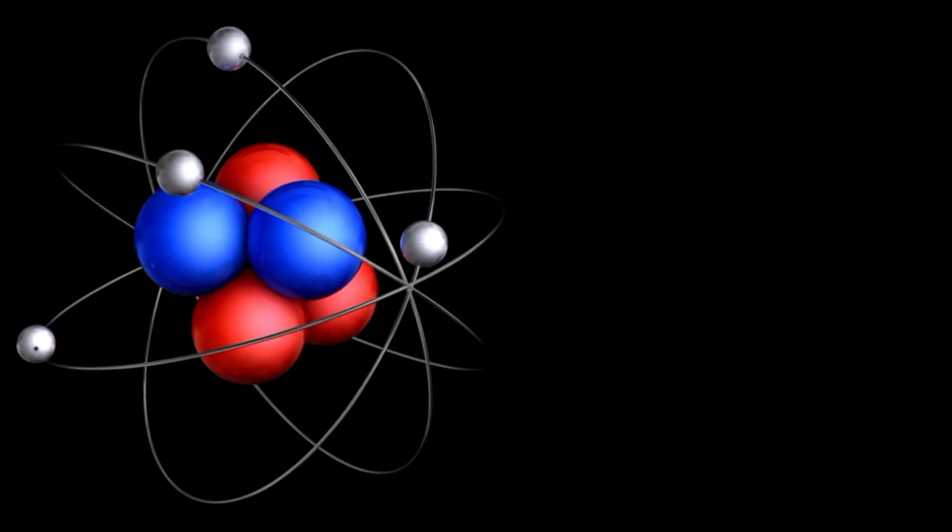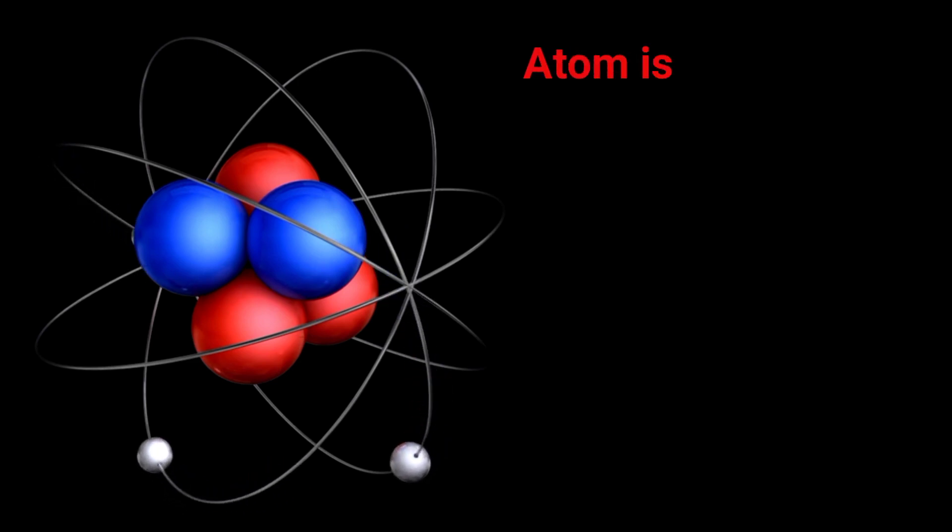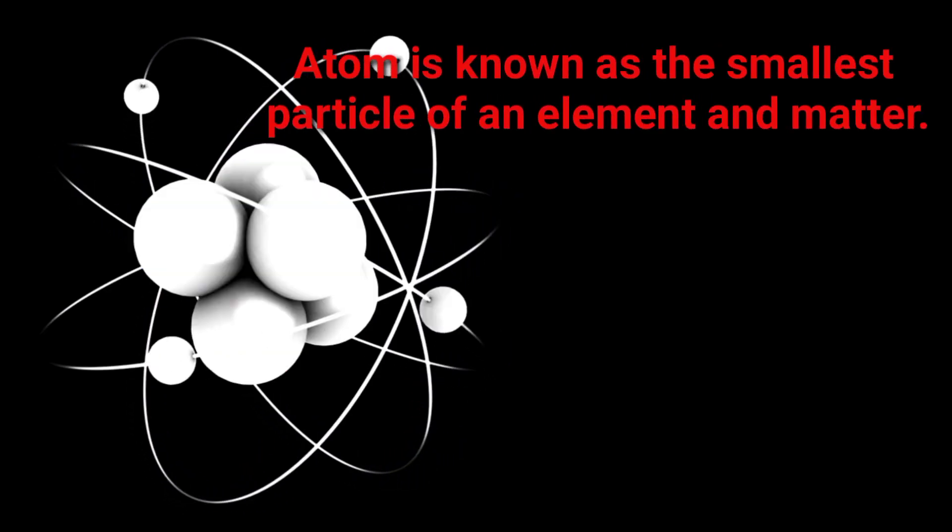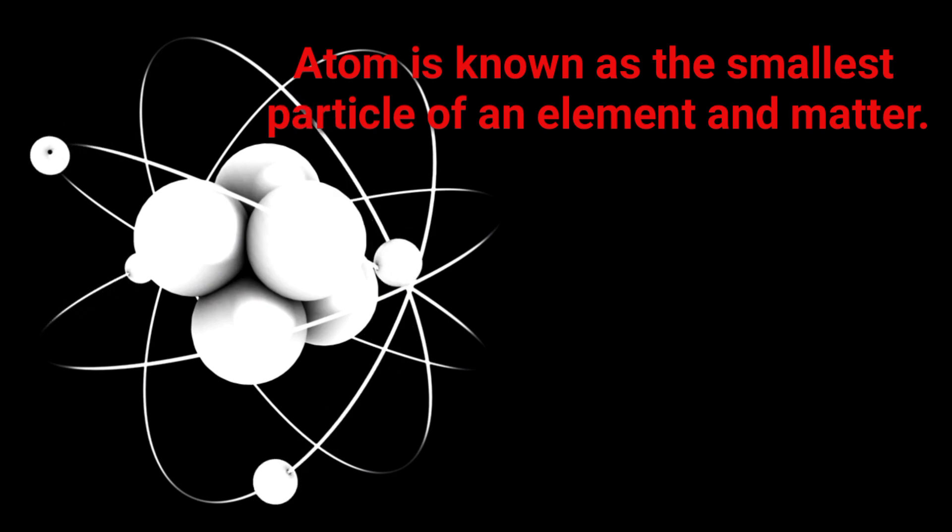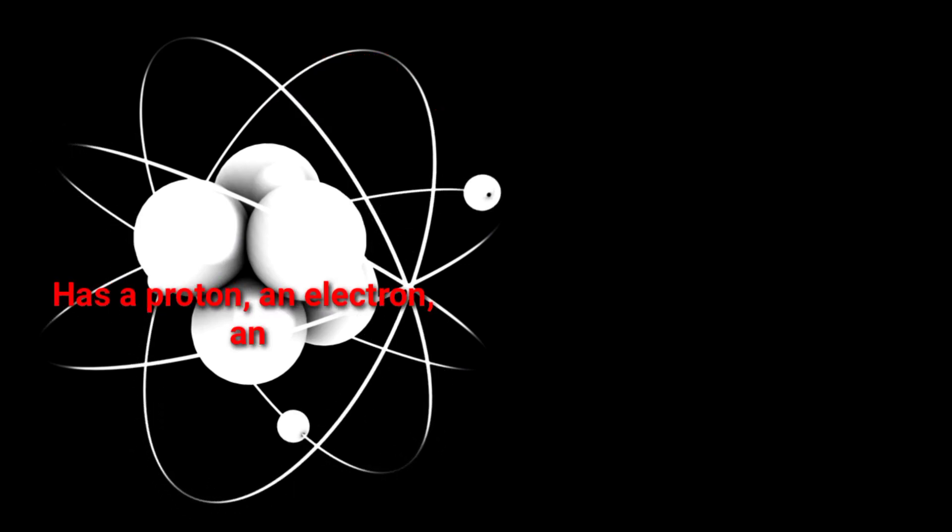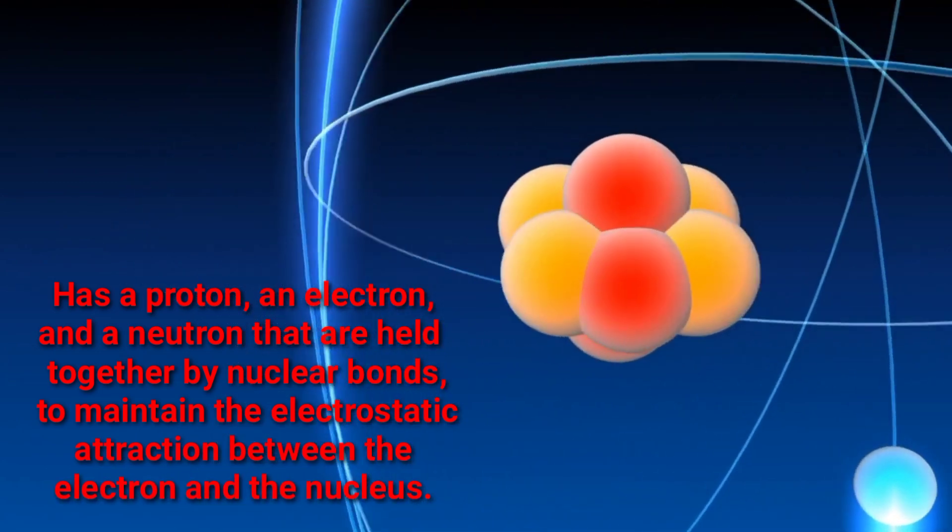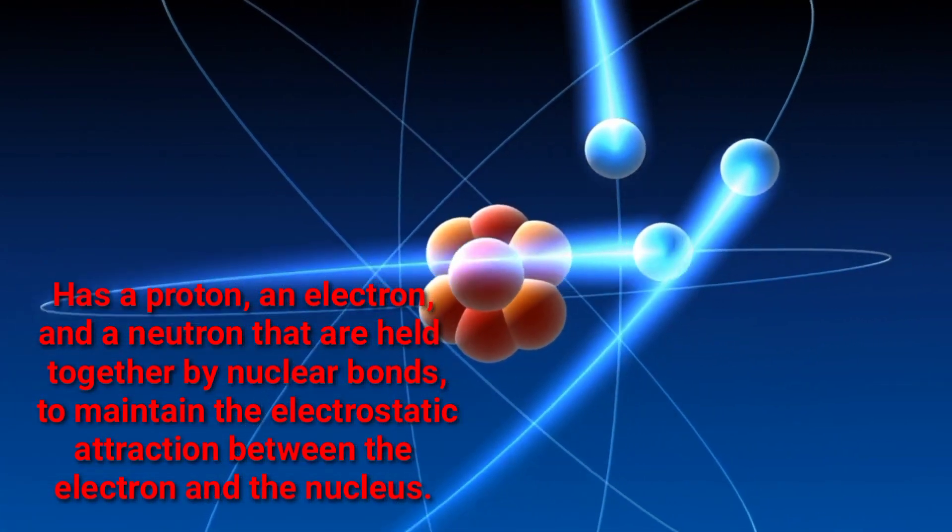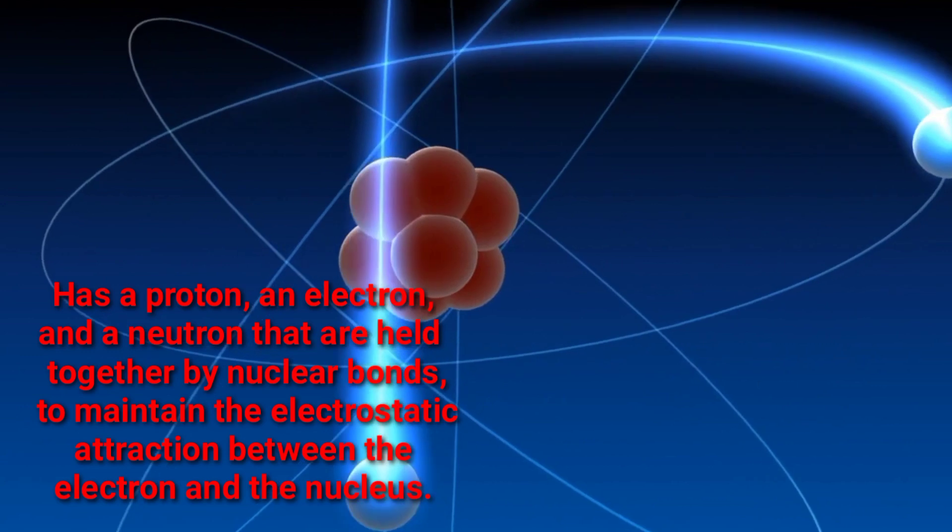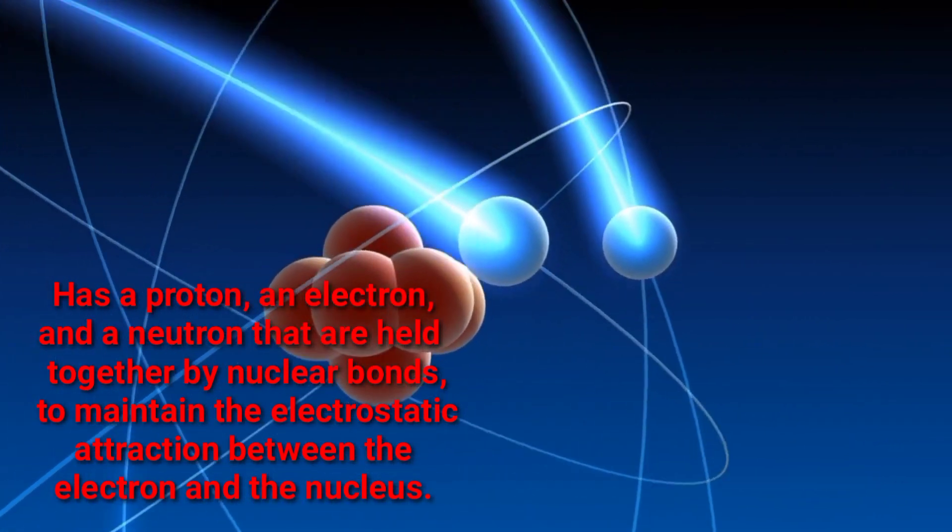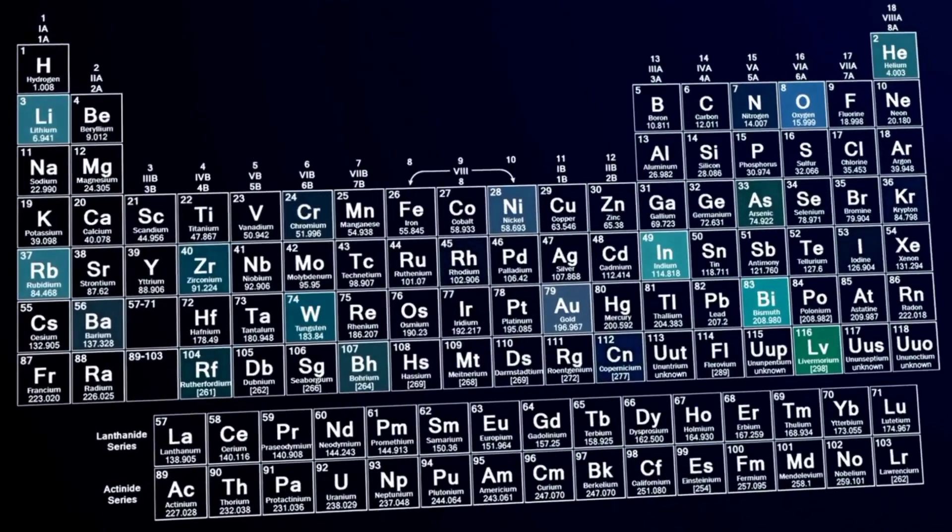The atom is known as the smallest particle of an element and matter. It is usually a single neutral particle. An atom has a proton, an electron, and neutron that are held together by nuclear bonds to maintain the electrostatic attraction between the electron and the nucleus.